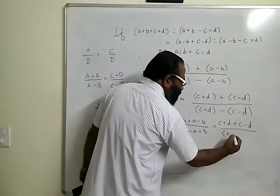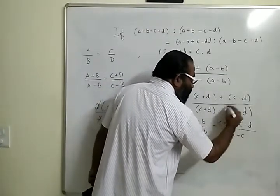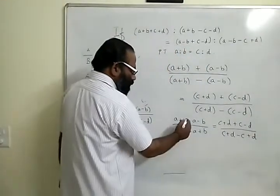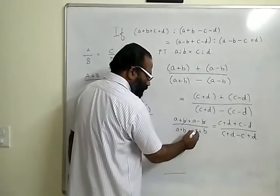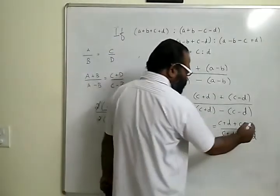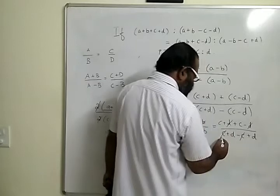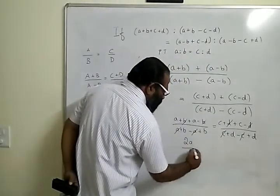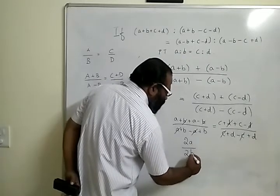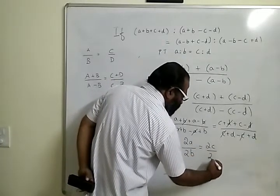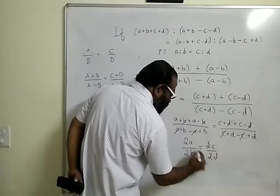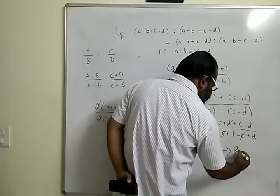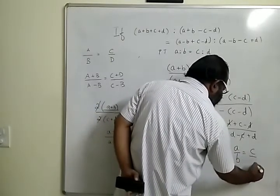So the b and the b cancels, here the a and the a cancels, here d and d, and here c and c. So what are you left with? You are left with 2a by 2b equals 2c by 2d. The 2 and the 2 cancel out, and so I have a by b equals c by d.